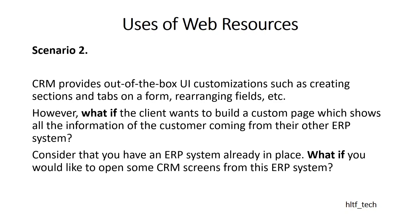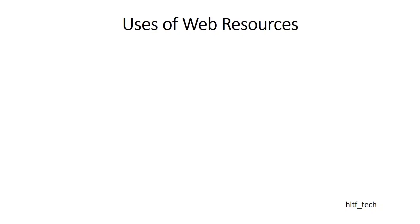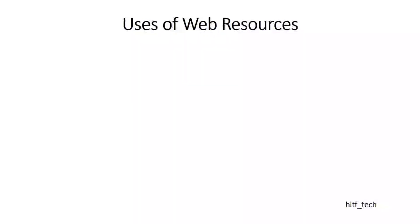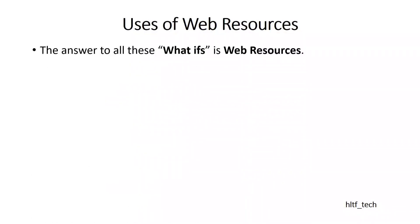Regarding scenario three: CRM comes with a standard ribbon bar. The ribbon bar contains controls at the top of the form — for example, New, Edit, Delete, Assign buttons. But what if you want to add a customized ribbon button of your own? The answer to all these 'what ifs' is web resources.